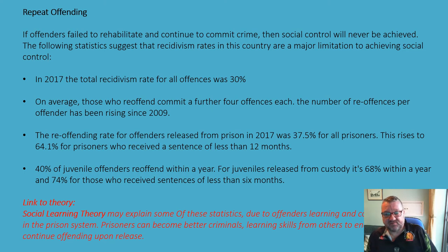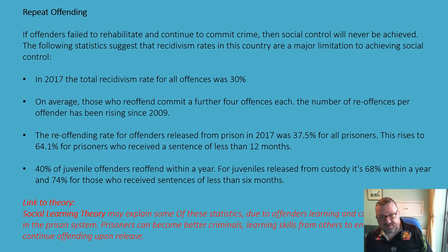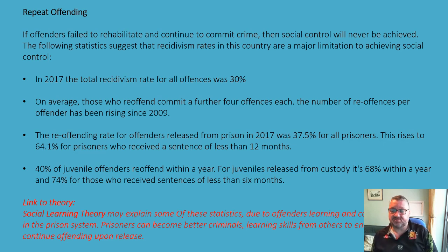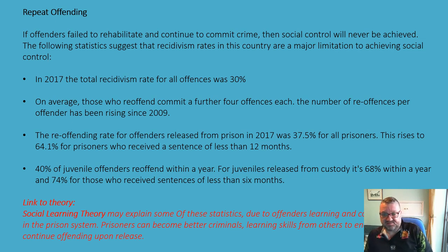40% of juvenile offenders re-offend within a year. For juveniles released from custody it's actually higher — 68% within a year, and 74% for those who received sentences of less than six months. This links to social learning theory. When you see writing in red in this PowerPoint, I'm linking it to a theory from unit two. If offenders are stuck in prison with long-term prisoners, they learn and copy within that system. Prisoners can actually become better criminals — we hear that prisons are schools for crime — and that encourages them to continue offending upon release.